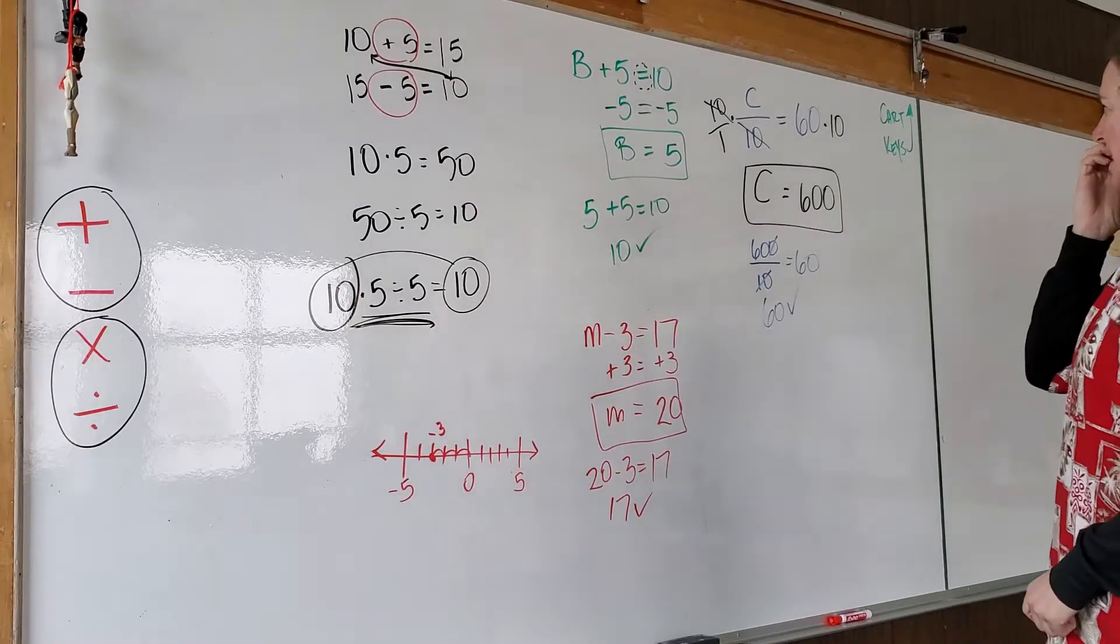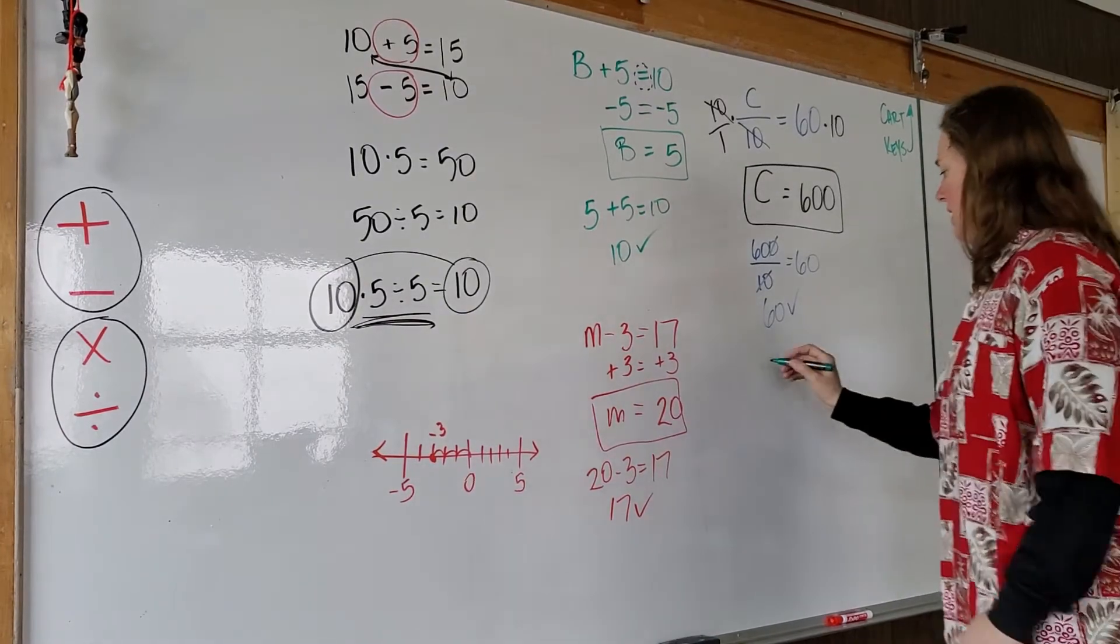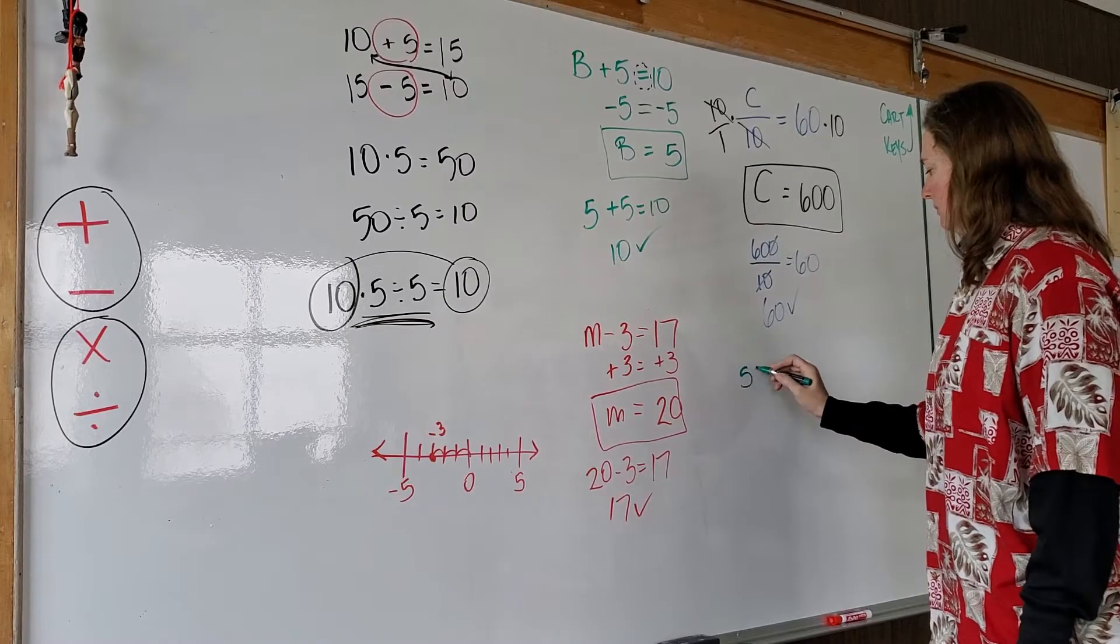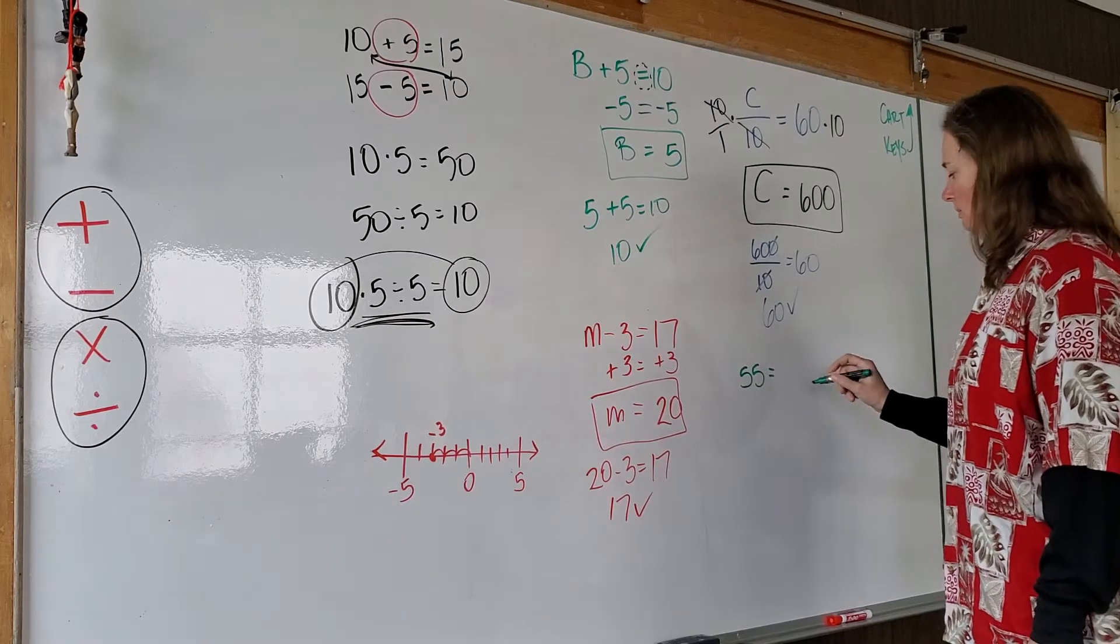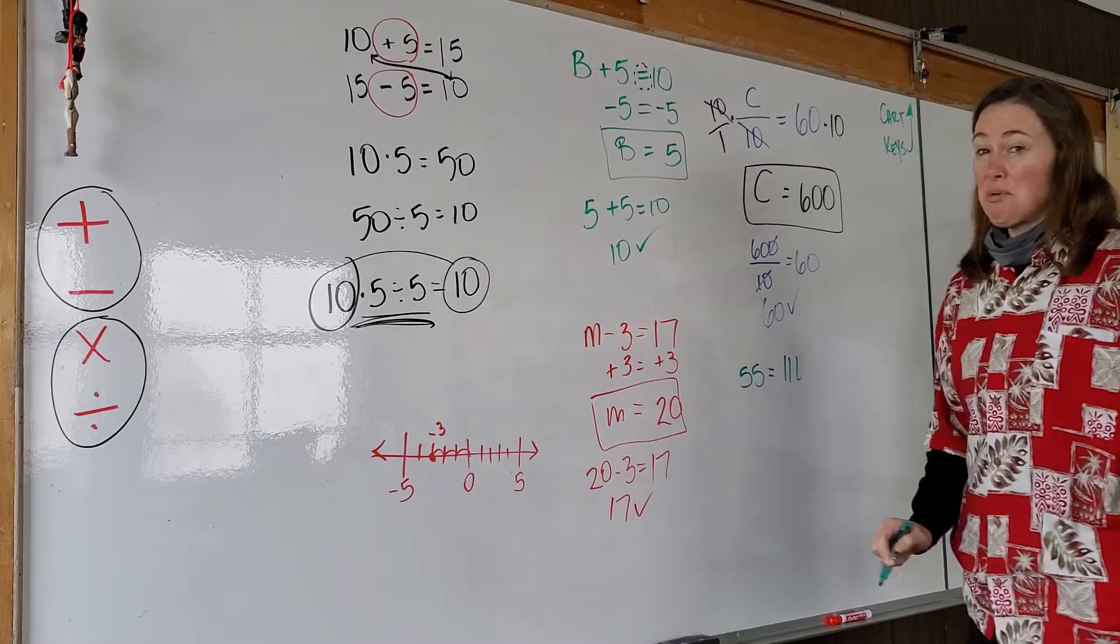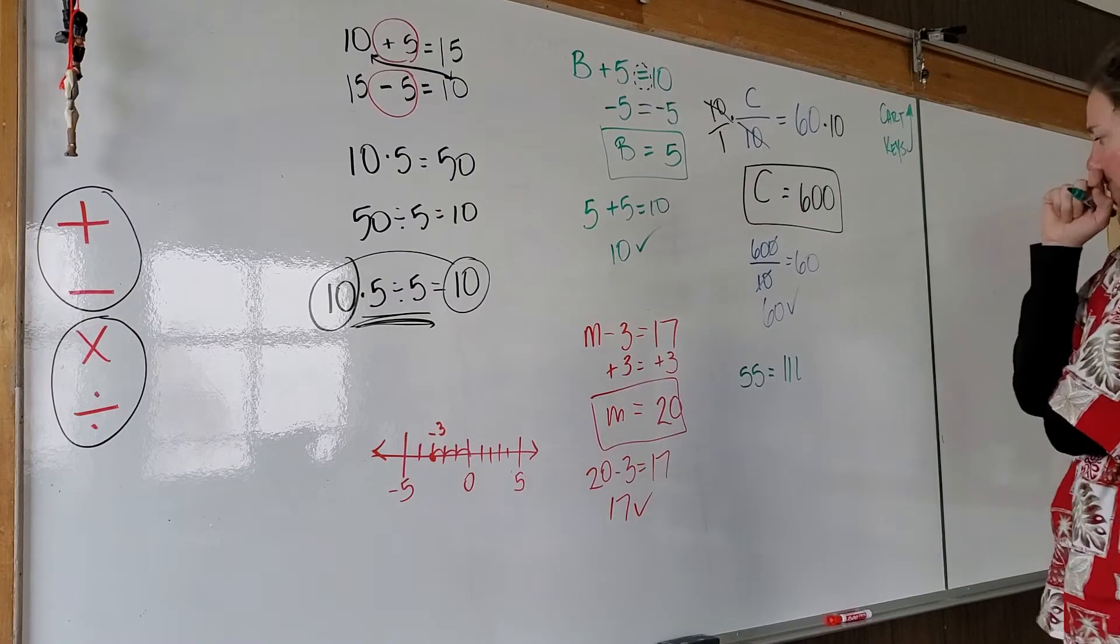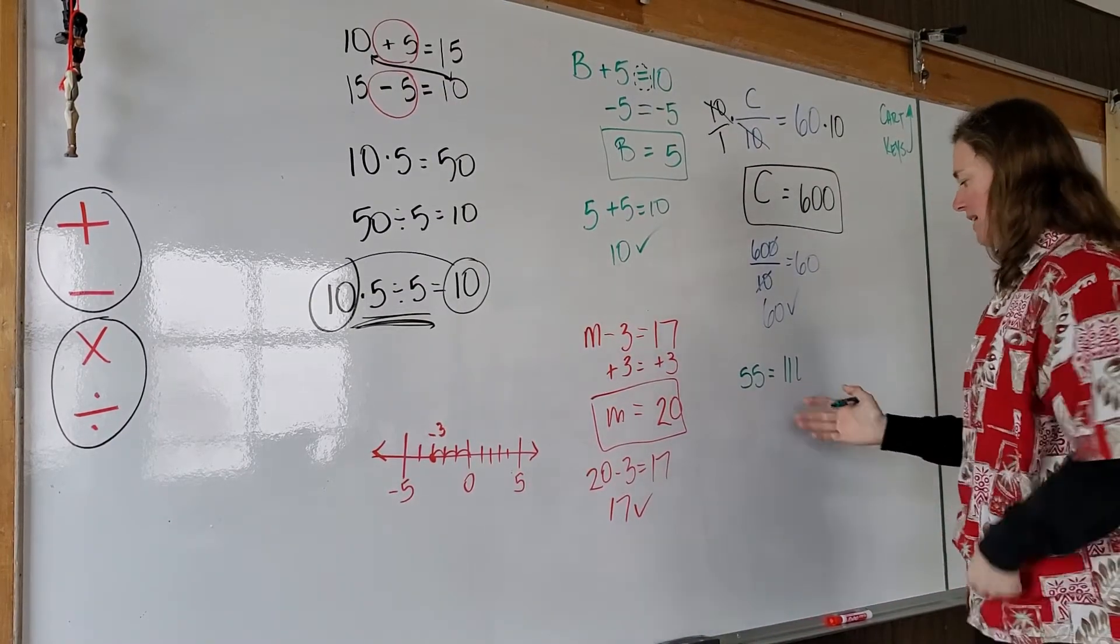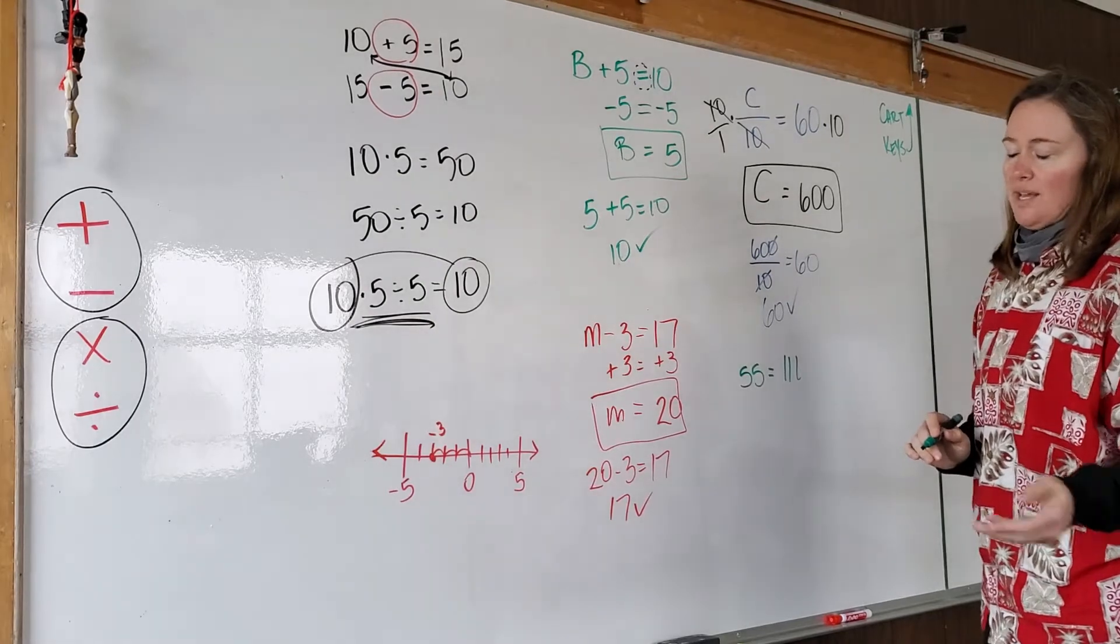Let's try one with multiplication, and we'll use its inverse. Okay. Let's say that 55 is equal to 11L. I put the 11L because then you can see the difference between ones and Ls. 11L. Well, what's happening to the variable? We're multiplying by 11. So we have to do the inverse, and the inverse of multiply is divide.